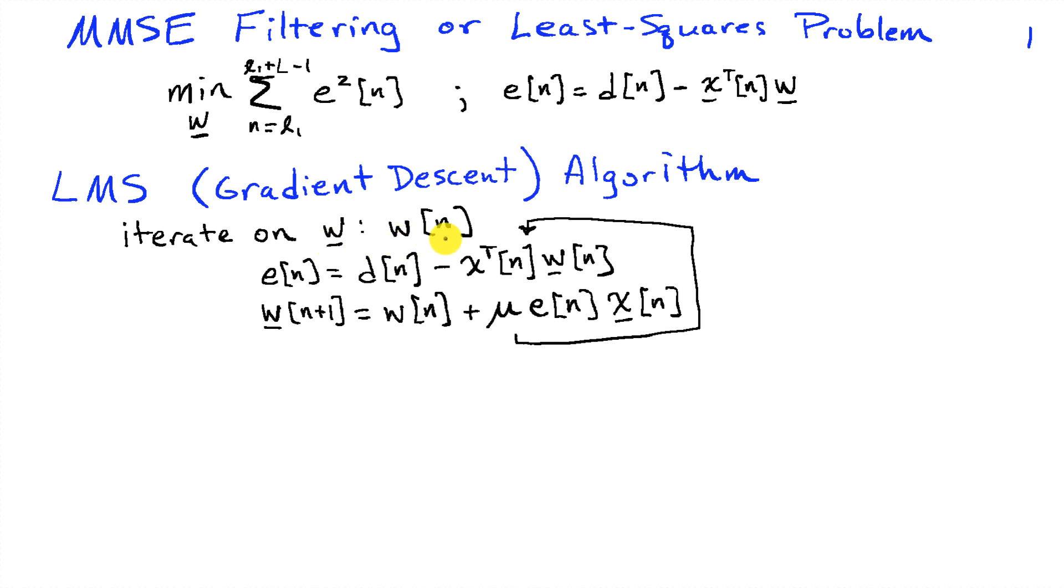We're going to let W depend on an index N, and then our error depends on the weights at time N. We calculate the error based on those weights, and then we get a new set of weights at time N plus 1 based on the weights at time N, our error, a step size parameter mu, and the data X of N.